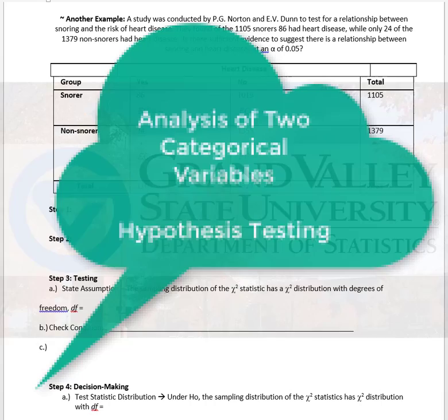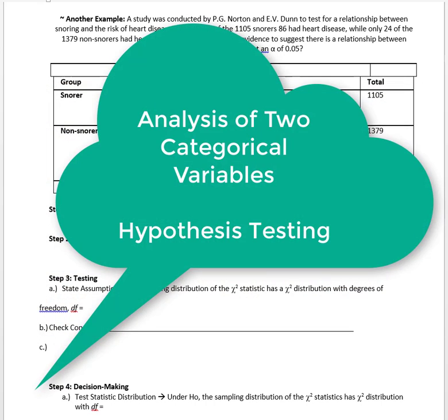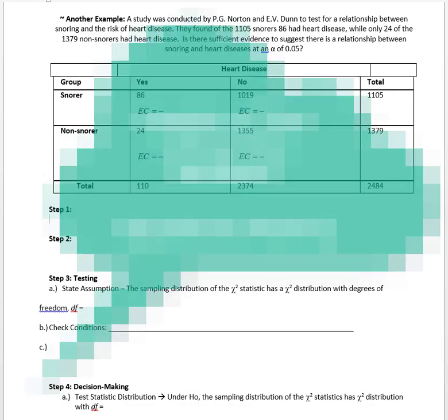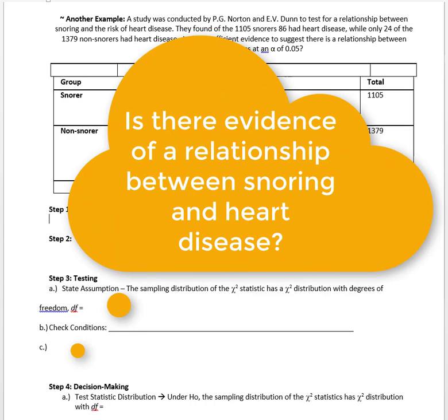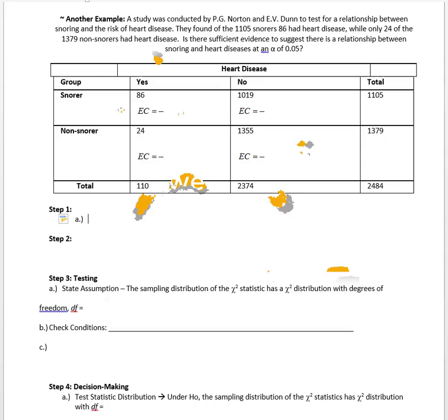Today we're still in the analysis of two categorical variables. Right now we're looking at how to perform inferences for that type of data, specifically a hypothesis test for a contingency table. For this scenario, we're looking at a relationship between snoring and the risk of heart disease, and we're going to do this hypothesis test looking to see if there's sufficient evidence to suggest a relationship between snoring and heart disease.